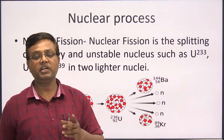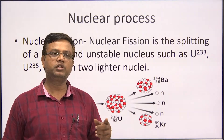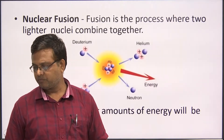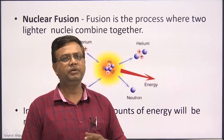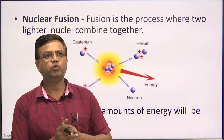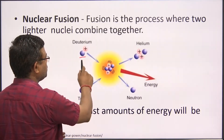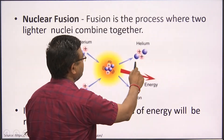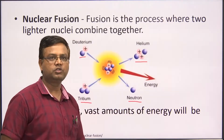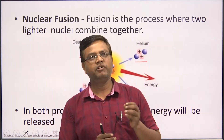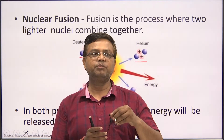It is an average of 2.5 neutrons — there may be 2 or 3 in any given reaction, but the average is 2.5. Now, nuclear fusion is the process where two lighter nuclei — for example deuterium and tritium — combine together to form helium, releasing a large amount of energy and one free neutron. In both processes — nuclear fission and nuclear fusion — a vast amount of energy is always released, and this is our primary interest.